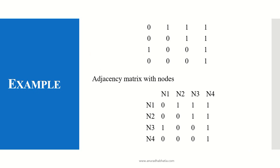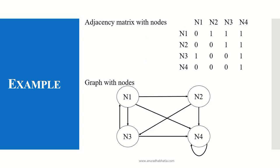For the given adjacency matrix, we find the adjacency matrix with the nodes. It is a 4 by 4 matrix, so we have the nodes labeled as N1, N2, N3, and N4 — in the rows as well as in the columns. After having these rows and columns named, we design the graph for these nodes.